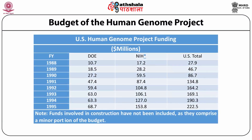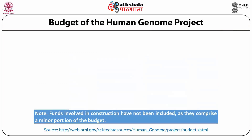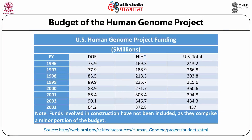The following table highlights the budget of the Human Genome Project in terms of dollars spent by the DOE and the NIH. One thing to note is that funds involved in construction have not been included as they comprise a very minor portion of the budget.